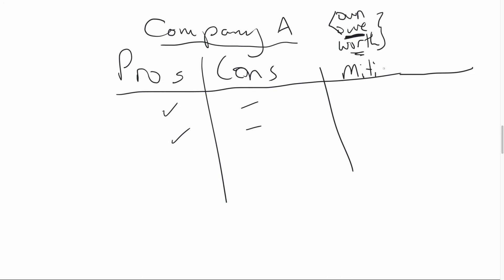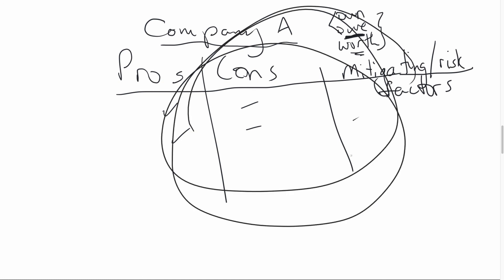You might also want a column for mitigating or risk factors — things that would mitigate or present risks to your assessment. For example, if you say this company has lots of cash and will probably have lots of cash for the next year or two, what would present a risk to that being an advantage? Something terrible could happen and the cash would go away. So: pros, cons, and then things that could undo that opinion. At the end, synthesize it all and come up with an opinion: which company is better off and why? Highlight maybe three key things, do that for each firm, and give it a shot.